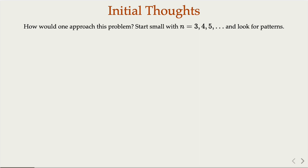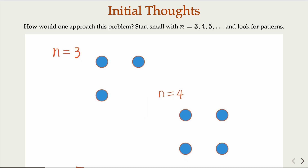For example, n equals 3, 4, 5 — and then you look for patterns. This is how you solve these problems. So let's consider the n equals 3 case. Here I'm using dots to represent people. You have at least one handshake — we draw a connection to represent that they have shaken hands. So for n equals 3, the answer is 1.